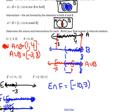Now for the union: combining the black and blue number lines together, everything on the number line is covered — there is nothing that is not either in the black or the blue. How do you write all real numbers? That's negative infinity to positive infinity. So the union of E and F is all real numbers, written as (-∞, ∞).